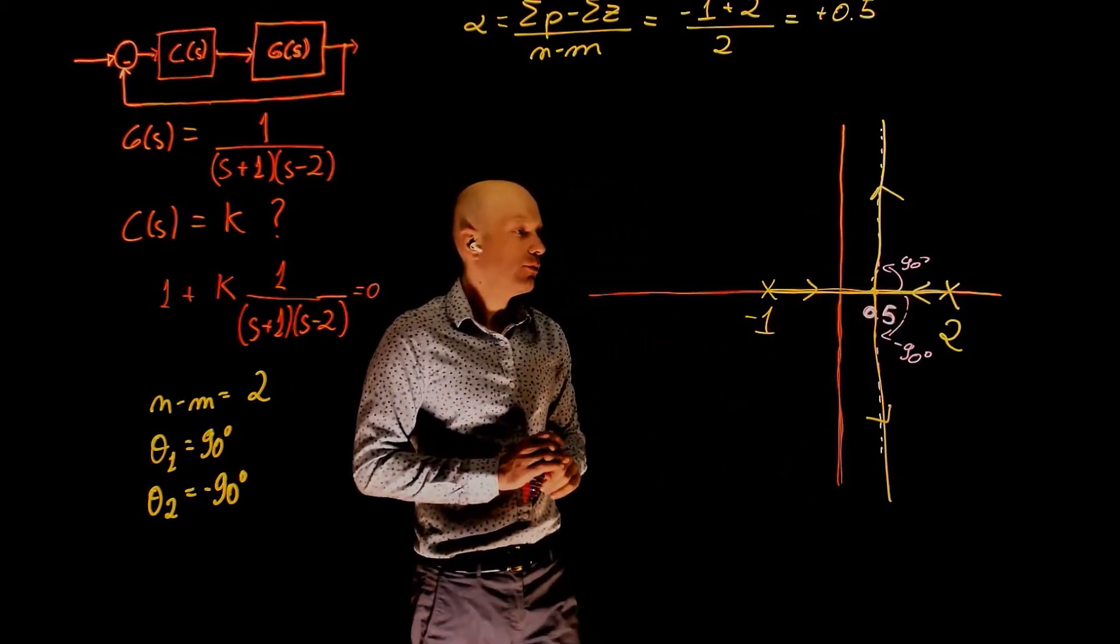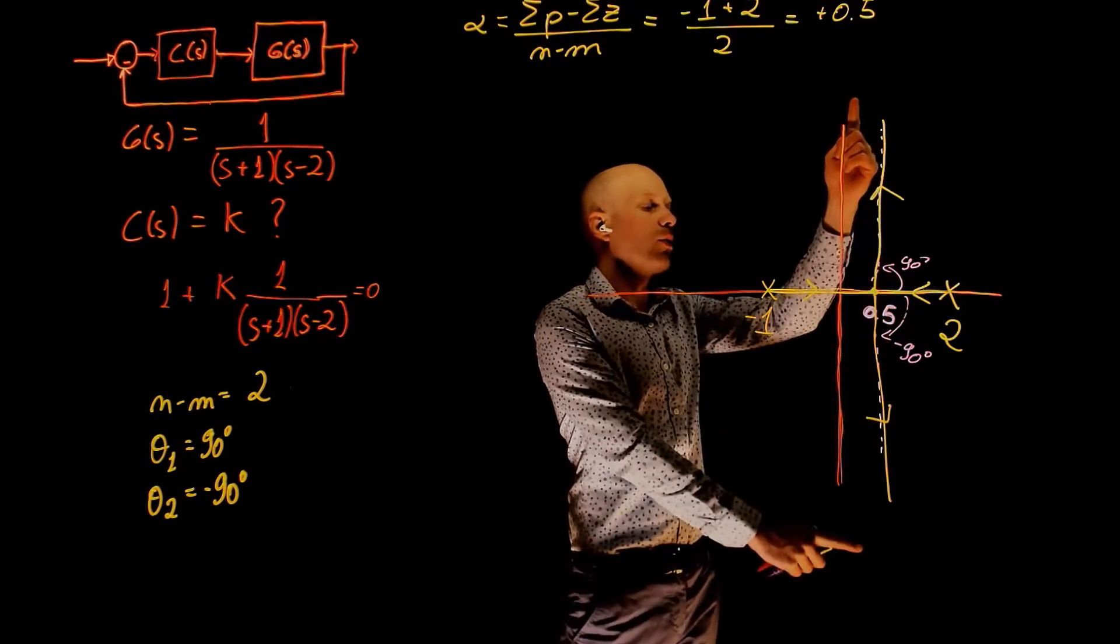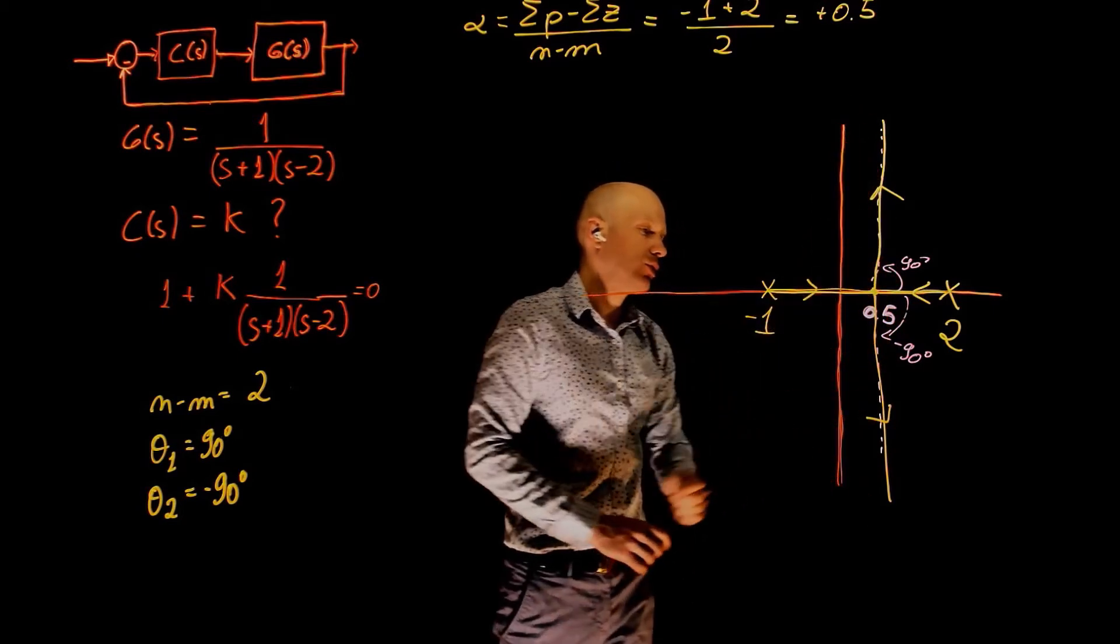So as K tends to infinity, these two poles come to 0.5, they break away, one goes to plus infinity, one goes to negative infinity.